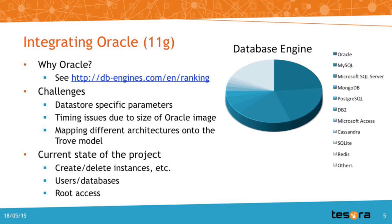One of the first questions you might have is: why would Trove as a community, or OpenStack as a community, be interested in supporting a commercial proprietary database? Well, it's pretty easy to find the answer if you go to the internet and look at sites like dbengines.com — you'll find very quickly that Oracle is still a huge player in the database market. Lots of enterprises are using Oracle to store their mission-critical data, and in order for Trove to be a very comprehensive product, we need to be able to provision these types of databases as well.